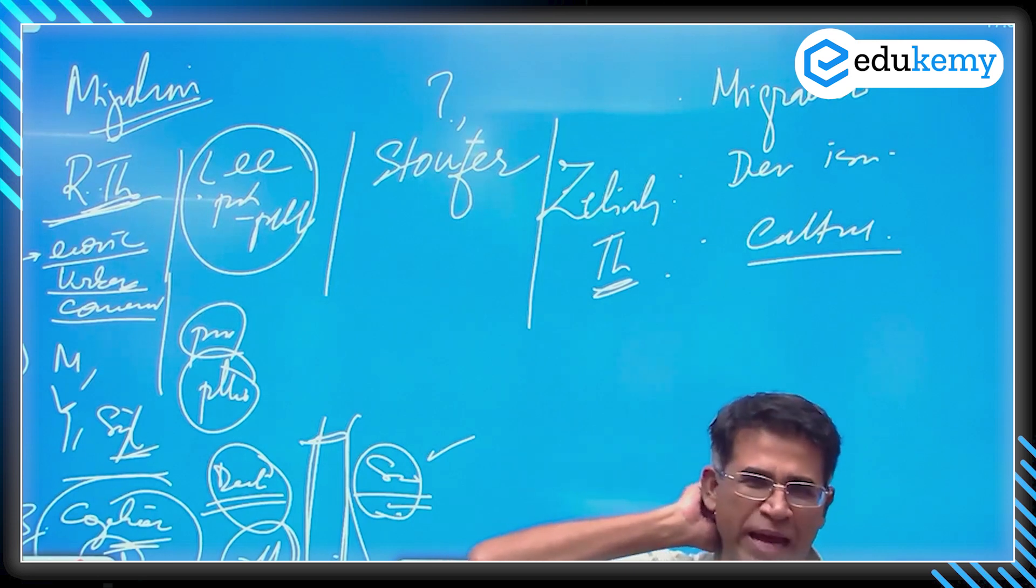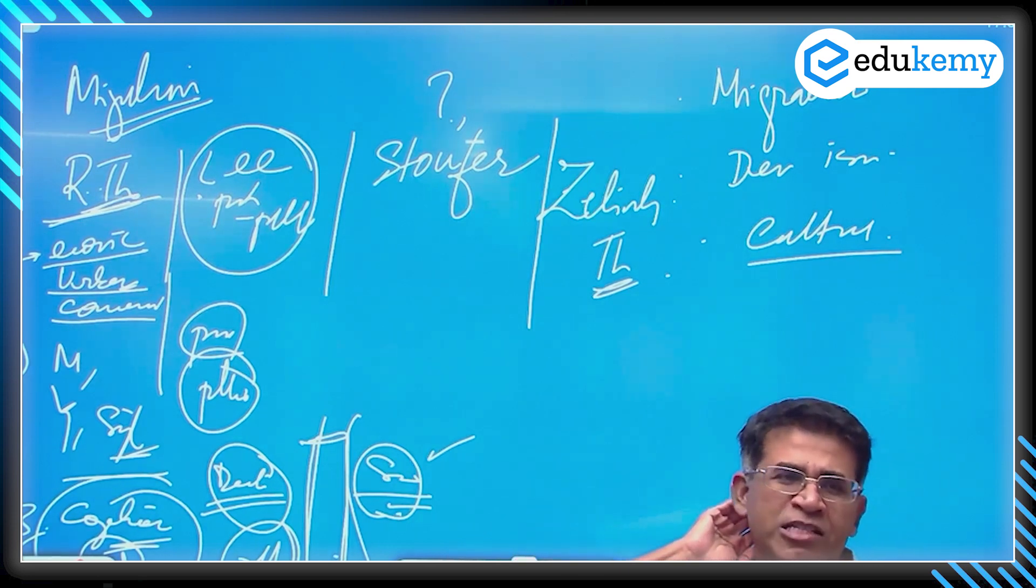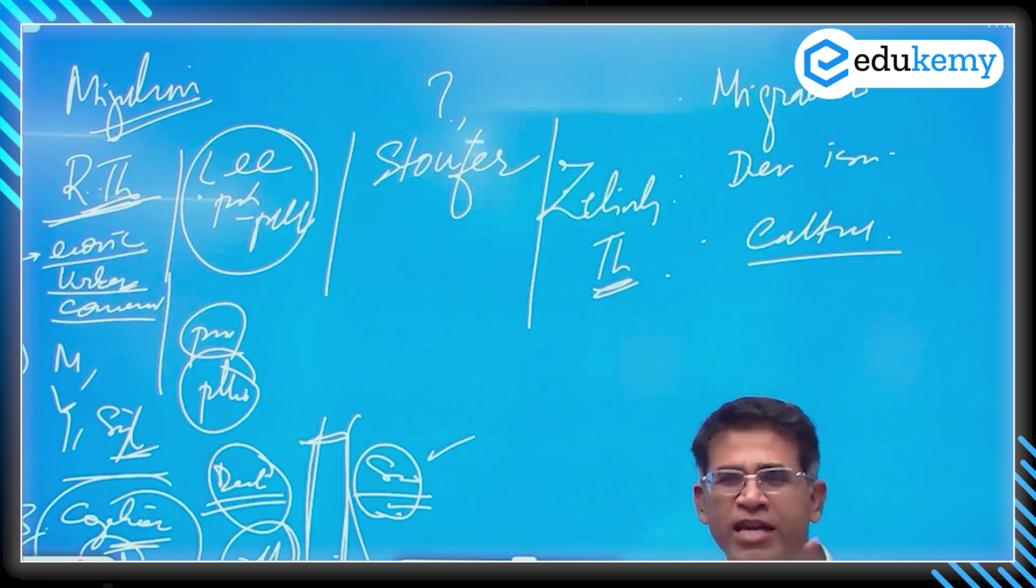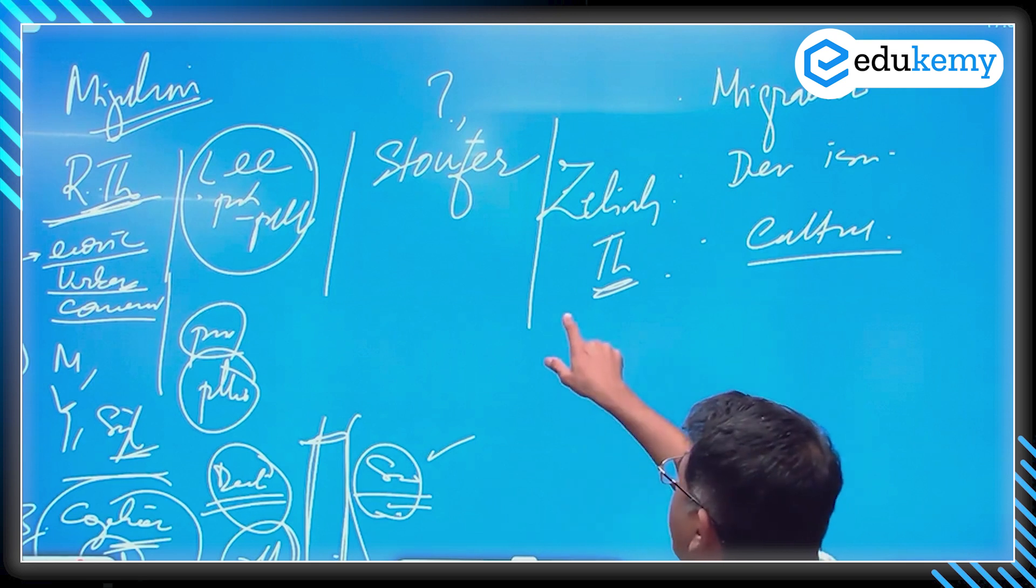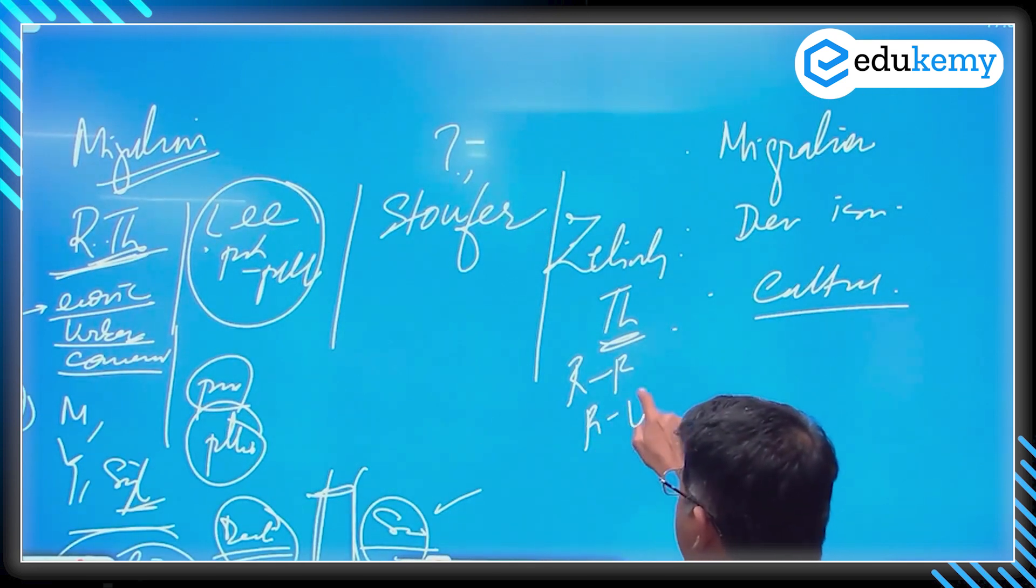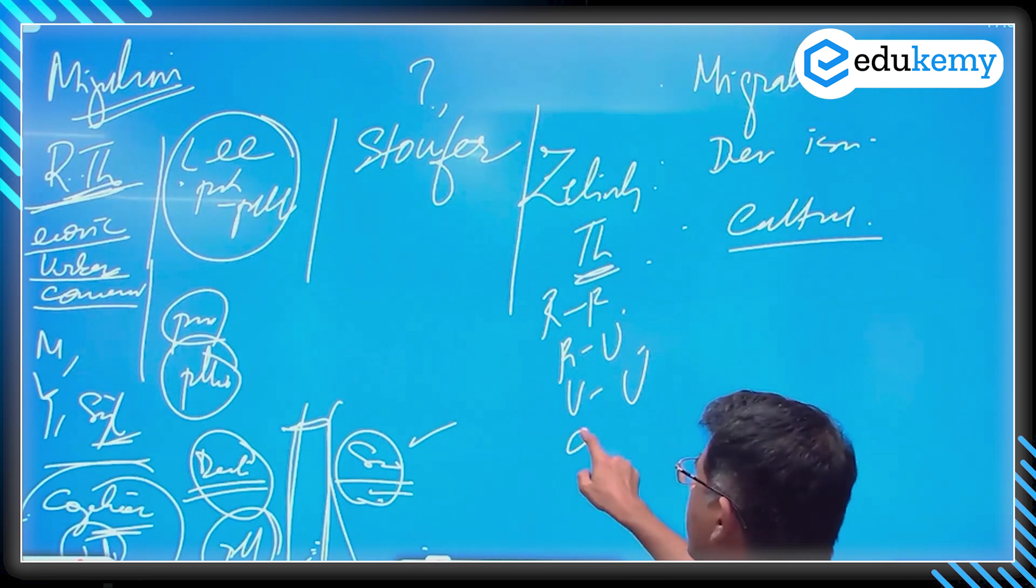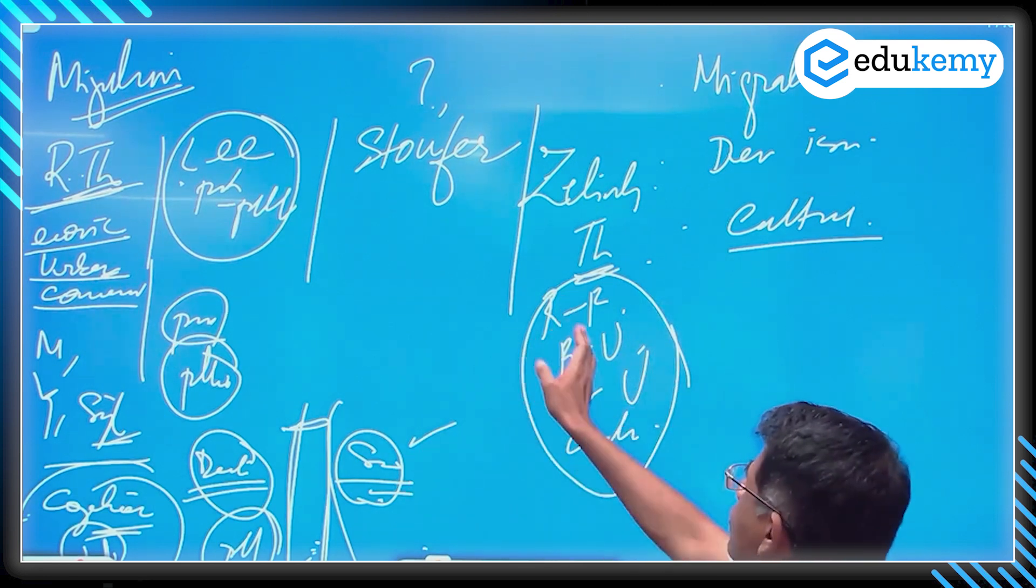Zelinsky's theory is primarily about the migrations of industrial labor or migrations related to industrial demand of labor. He's talking about rural to rural migration, rural to urban migration, urban to urban migration, and finally urban circulation.